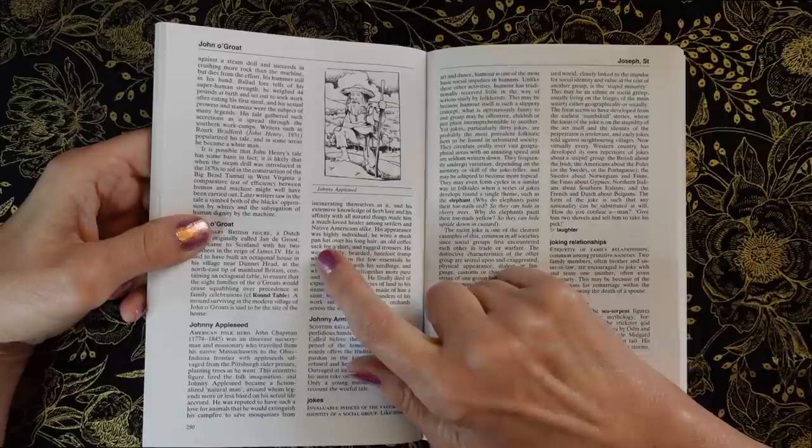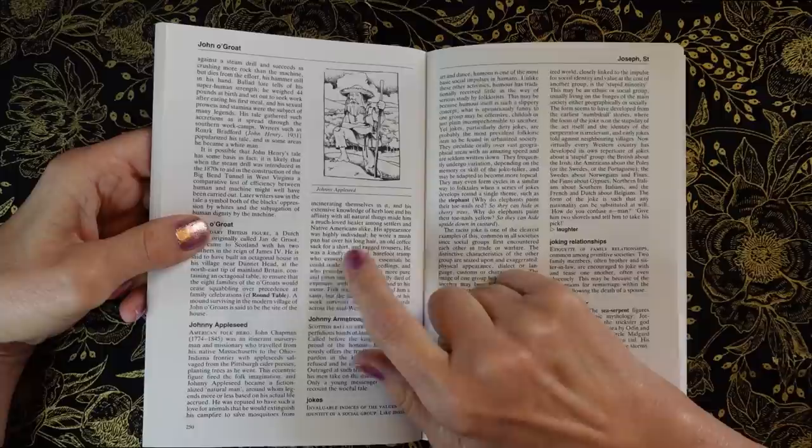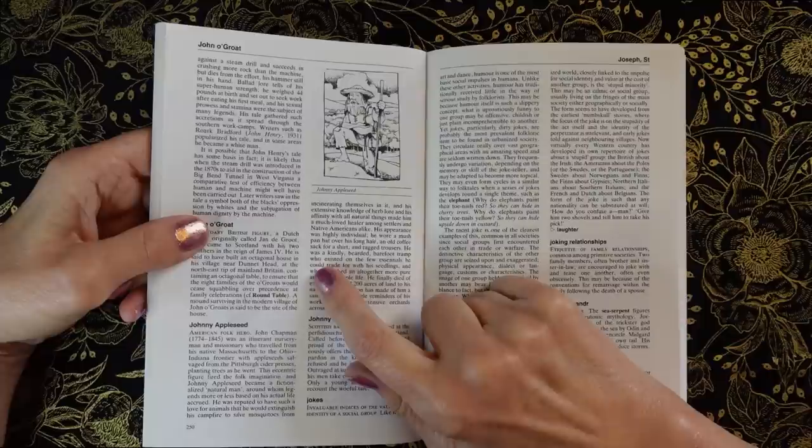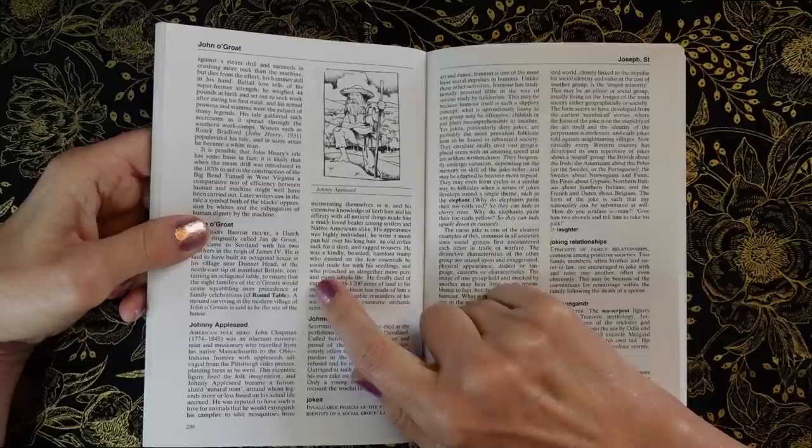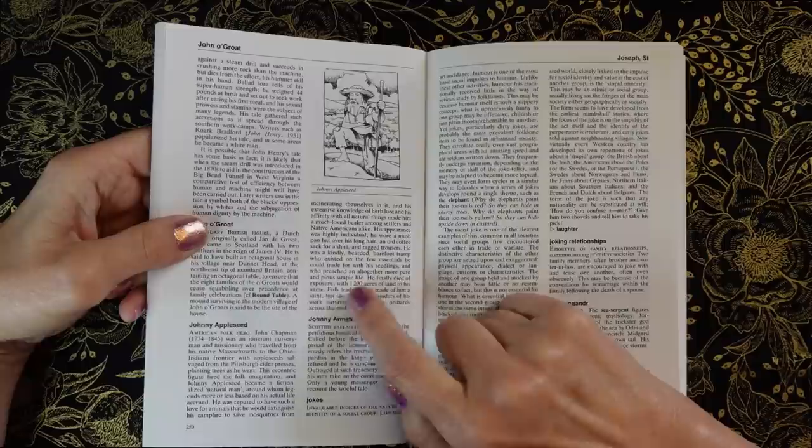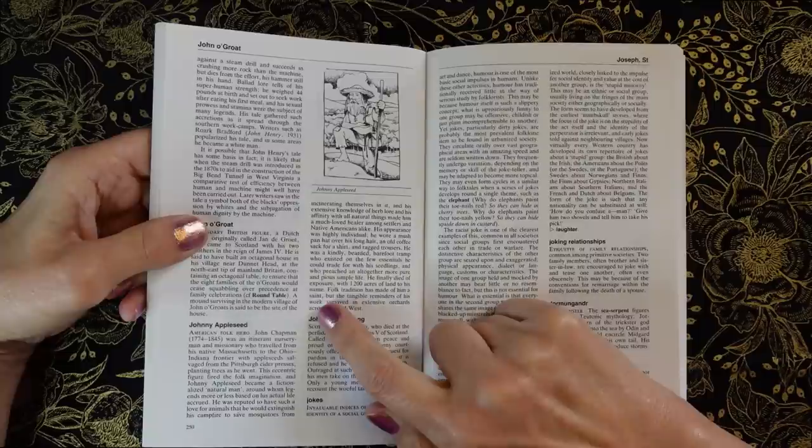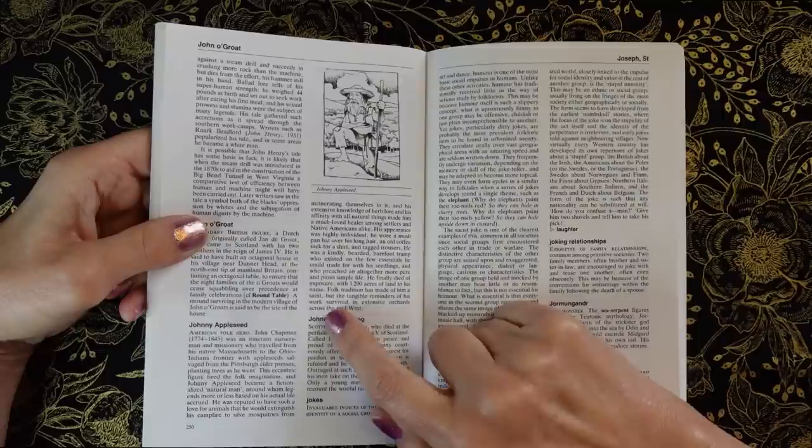His extensive knowledge of herb lore and his affinity with all natural things made him a much-loved healer amongst settlers and Native Americans alike. His appearance was highly individual. He wore a mush-pan hat over his long hair, an old coffee sack for a shirt and ragged trousers. He was a kindly, bearded, barefoot tramp who existed on the few essentials he could trade for with his seedlings and who preached an altogether more pure and pious simple life. He finally died of exposure with 1,200 acres of land to his name. Folk tradition has made of him a saint, but the tangible reminders of his work survived in extensive orchards across the Midwest.